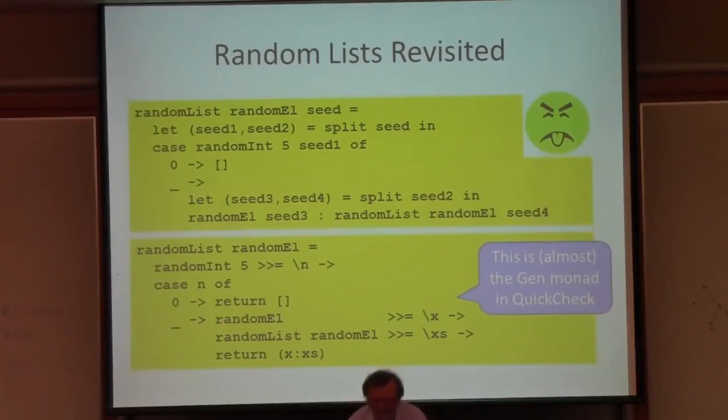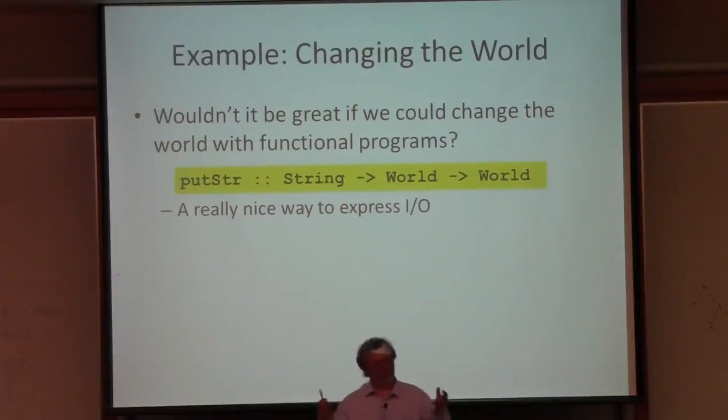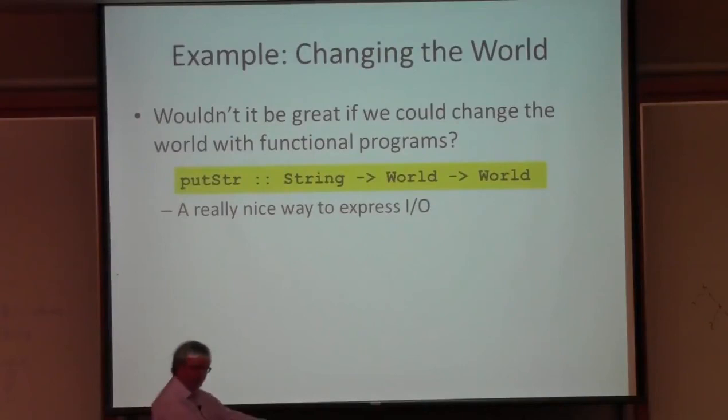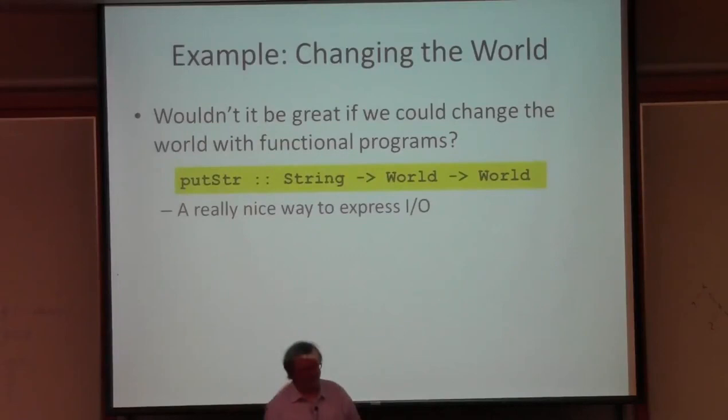Here's another example: wouldn't it be great if functional programs could change the world? We've been dreaming about that for a long time. For example, when we want to print a string on the terminal, we could just call the putString function, give it the string we want to print, give it the current state of the entire universe, and let it return a new universe in which the string has been printed on the screen.